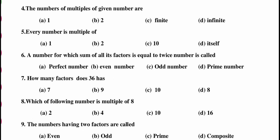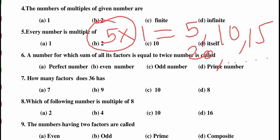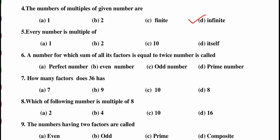Question number 4: are the number of multiples of a given number finite or infinite? For example, if I take the number 5: 5 ones are 5, 5 twos are 10, 5 threes are 15, 5 fours are 20 — and so on, we get infinite multiples. So the answer is infinite.